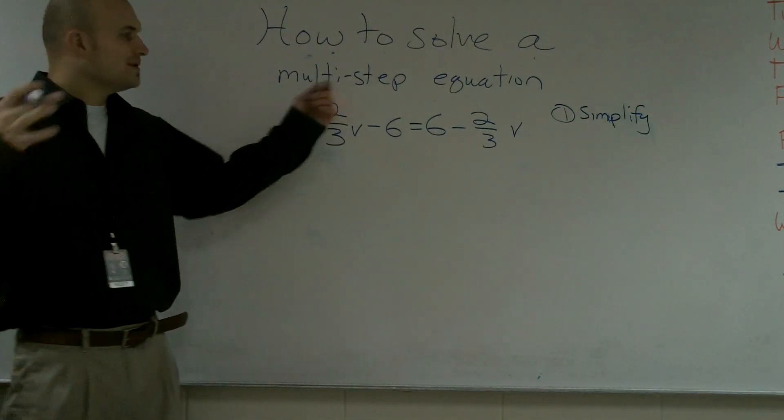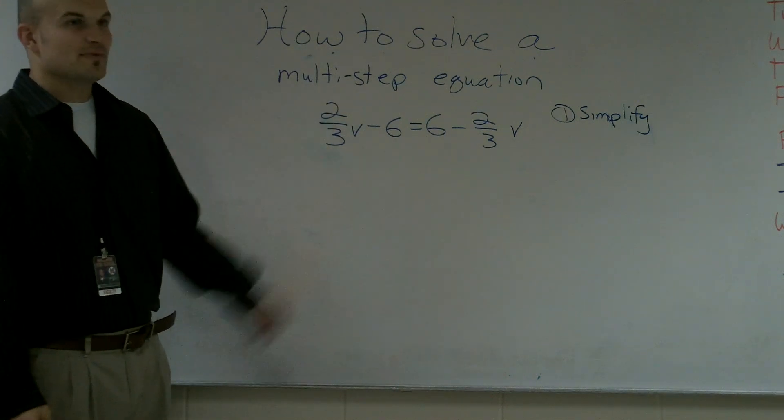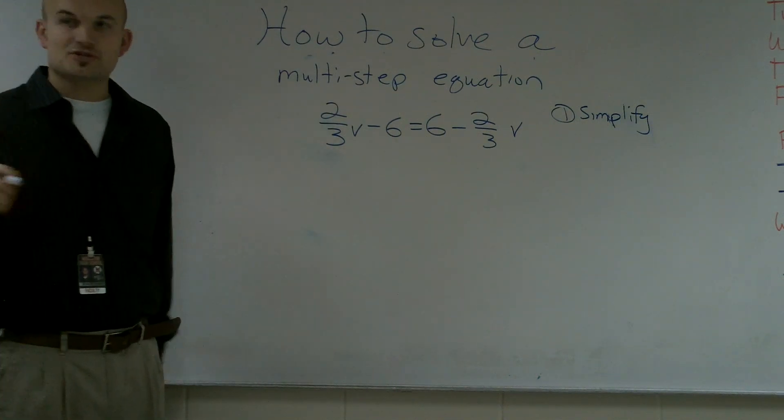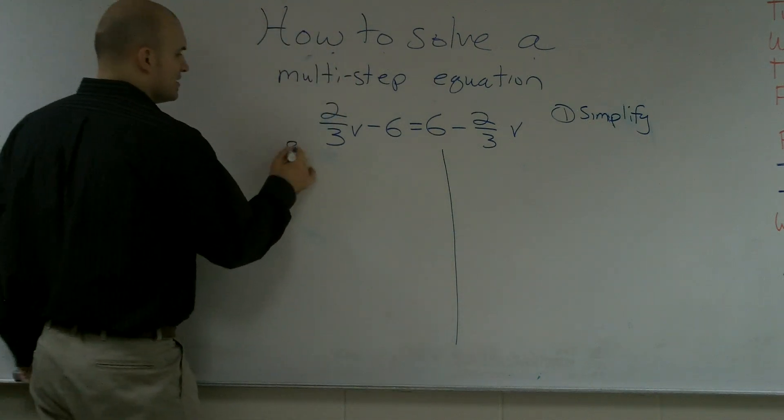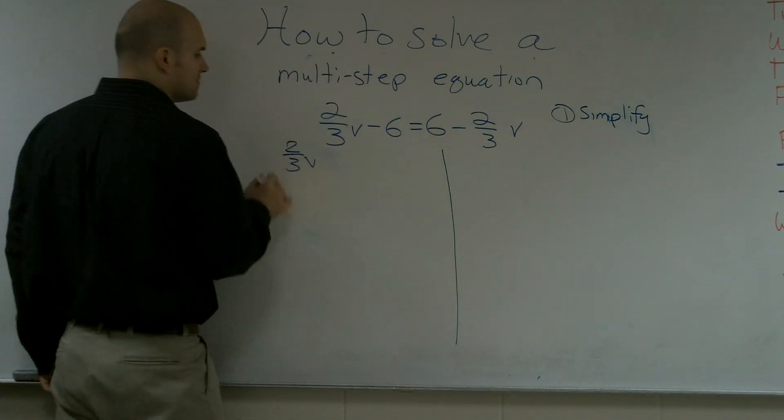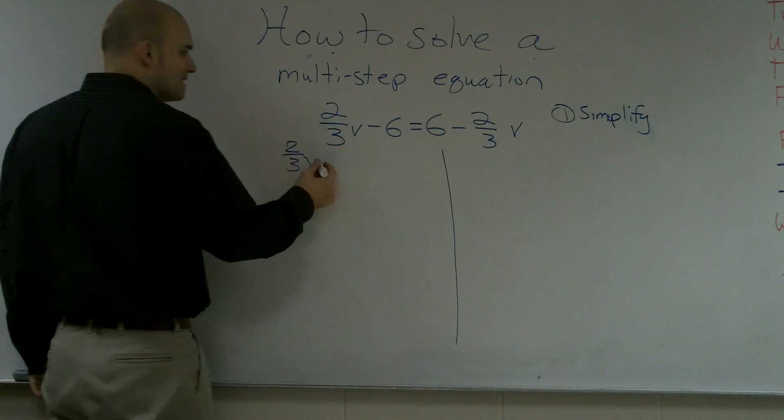So guys, there's two different ways to do this. One thing is you can simplify and get rid of the fractions. I'm going to show you guys one way. I'm going to do this twice. You guys can get rid of the fractions. How do you get rid of the fraction? You multiply by what's on the bottom.